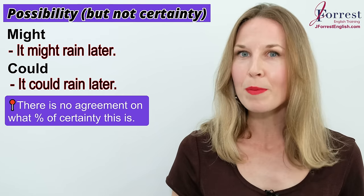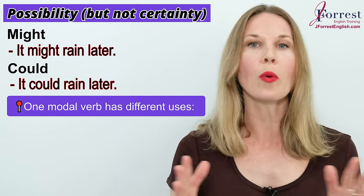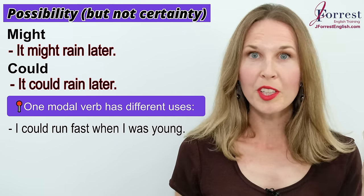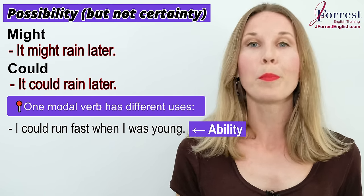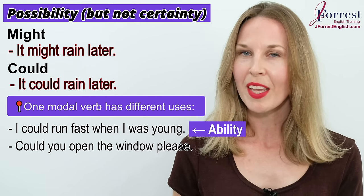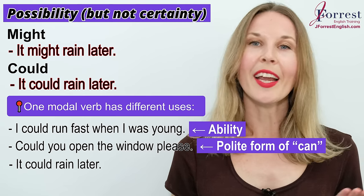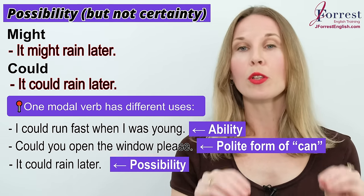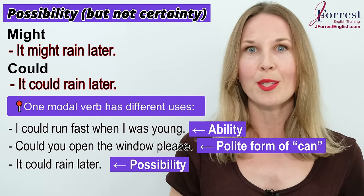I'm sure you've noticed that one modal can have different meanings. I could run fast when I was young — that's ability. Could you open the window, please? — that's the polite form of can. It could rain later — that's possibility. So you have to look at the context to understand how the modal is being used.